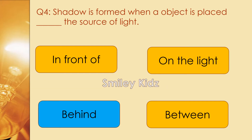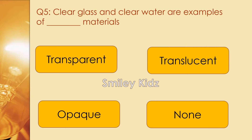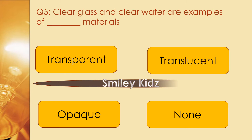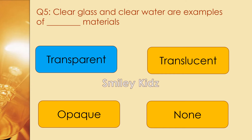Question number 5. Clear glass and clear water are examples of dash materials. Options are transparent, translucent, opaque, and none. The right answer is transparent. Clear glass and clear water are examples of transparent materials.